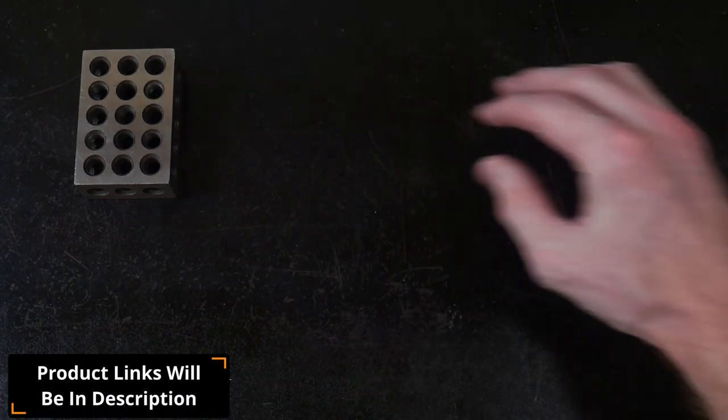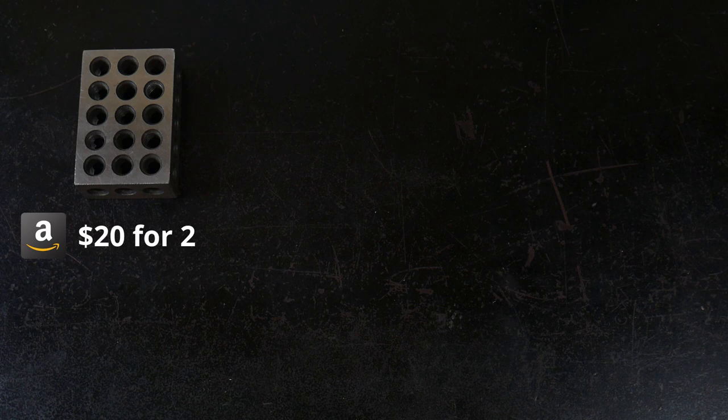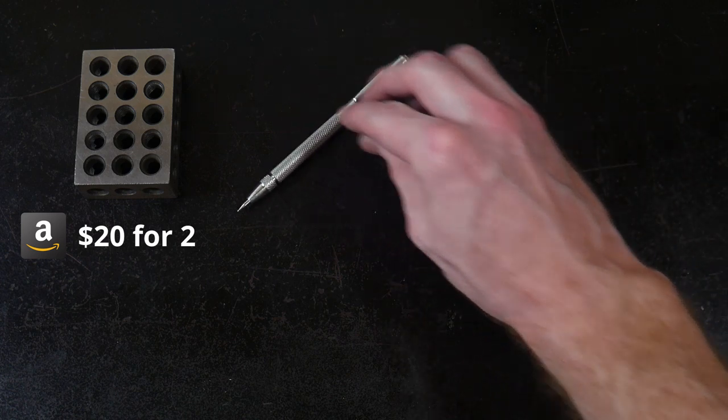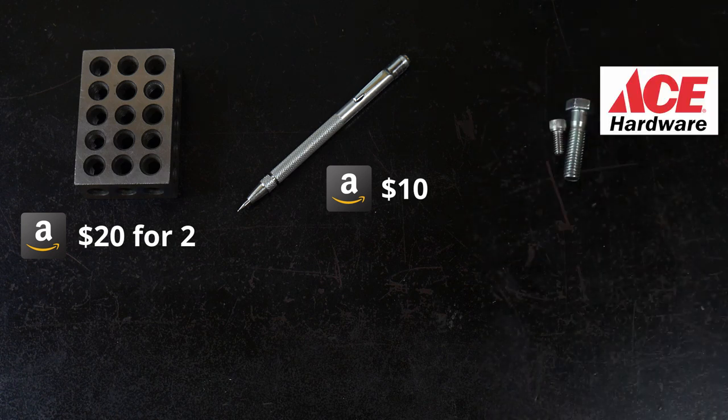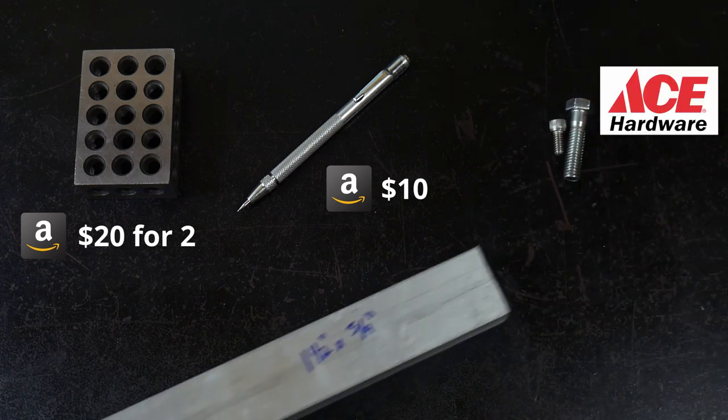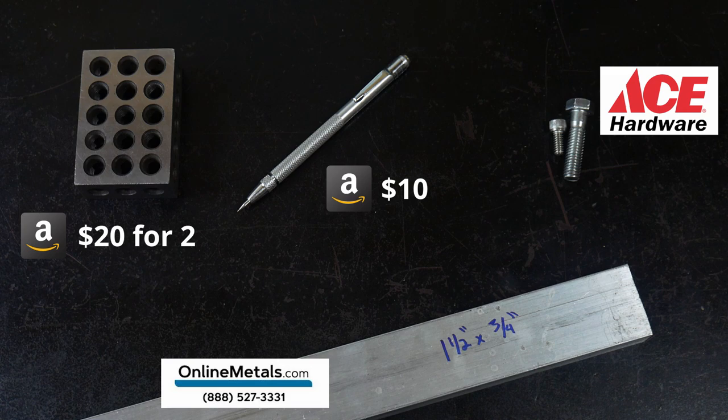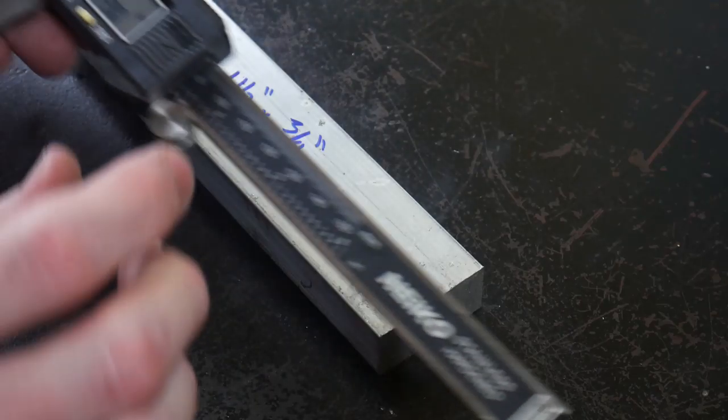We'll start off with the components for this build. The first thing you will need is a 321 block. My 321 block came in a pair from a cheap set on Amazon. You'll need a carbide scribe, some hardware, and a piece of aluminum that is one and a half inch by three quarters of an inch.